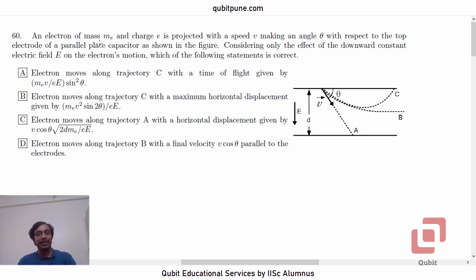That is the last MCQ from physics and also from the paper. Let's read the statement. An electron of mass Me and charge E is projected with speed V making an angle theta with respect to the top of the electrode of a parallel plate capacitor as shown in the figure. Considering only the effect of the downward constant electric field E on the electron's motion, which of the following statements is correct?